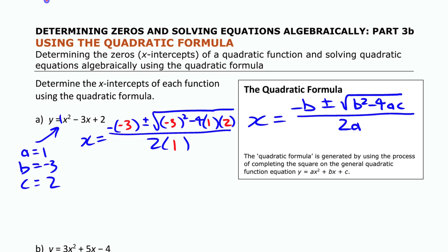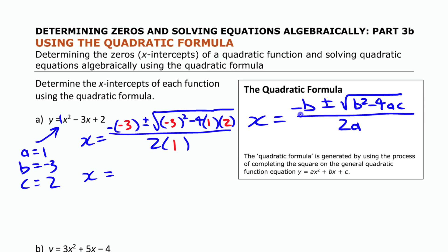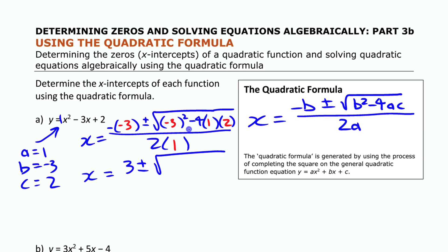I wouldn't try to put that directly into your calculator because you're liable to make mistakes. The key simplifications: minus of negative 3 becomes positive 3. When you square b it doesn't matter if it's negative or positive — squaring makes it positive. So b squared is 9, and 4 times 1 times 2 is 8, giving us the square root of 9 minus 8, all divided by 2.